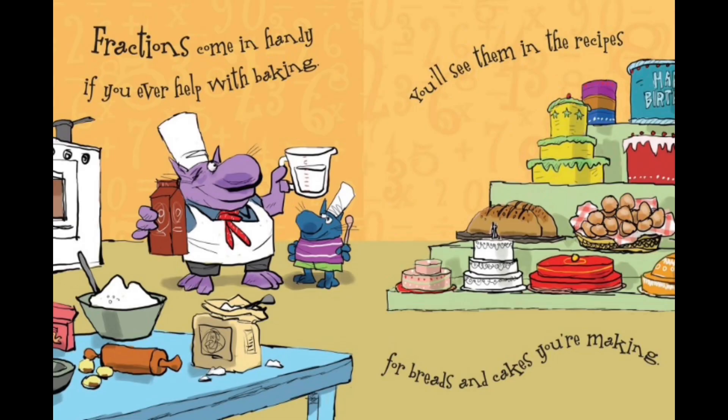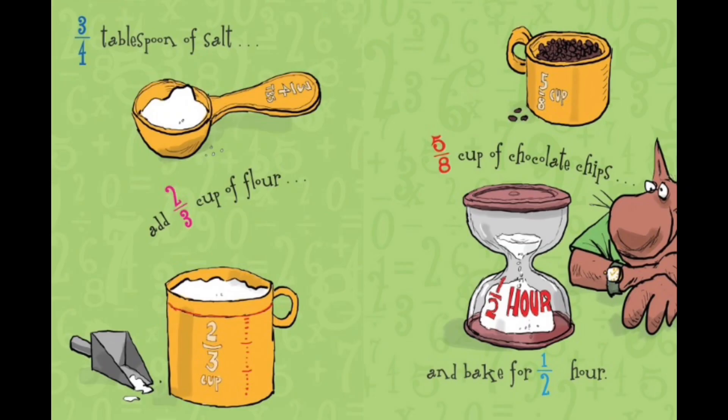Fractions come in handy. If you ever help with baking, you'll see them in the recipes for breads and cakes you're making. Three fourths tablespoon of salt. Add two thirds cup of flour. Five eighths cup of chocolate chips and bake for one half hour.